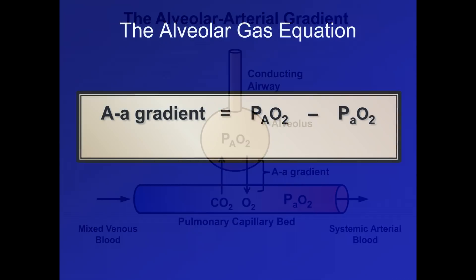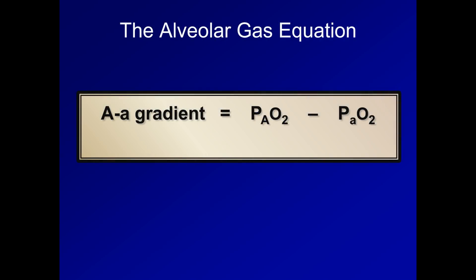Here's another way to look at the AA gradient. It is equal to the PAO2 minus the PaO2. While the PaO2 is measured directly from the ABG, there is no easy means by which the PAO2 can be measured. Therefore, it must be estimated using the alveolar gas equation.